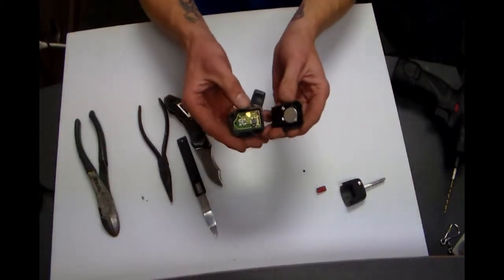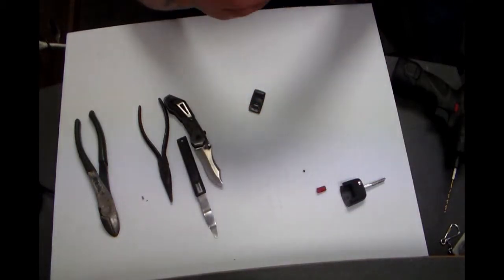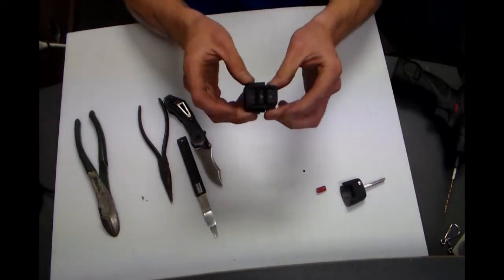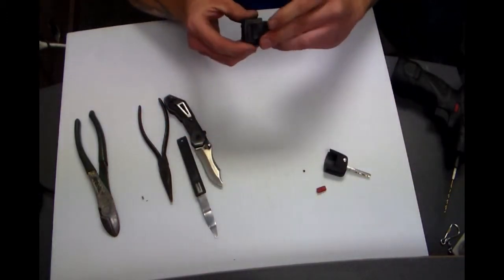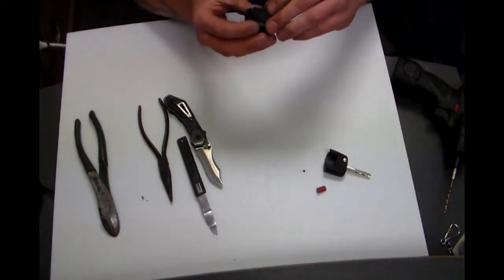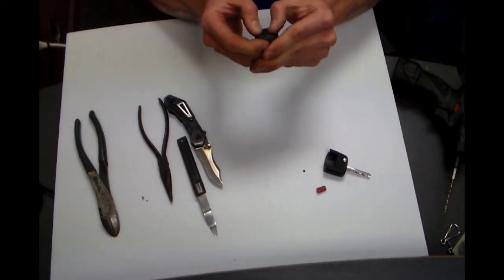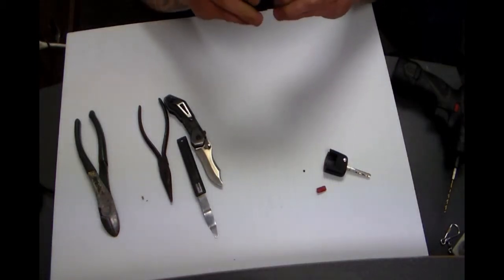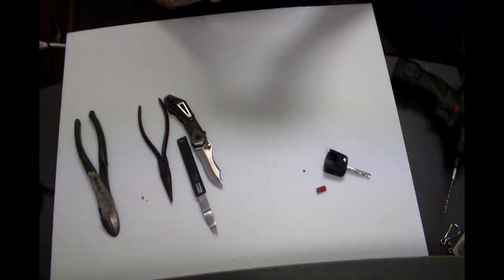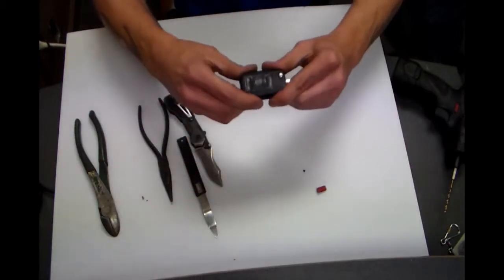Now at this point, you can take the two halves and go back together. Snap. Put the button pad back on. The lock goes to the top there. Button pad installed. You can put the two halves of the keys back together.